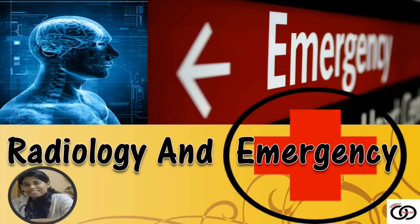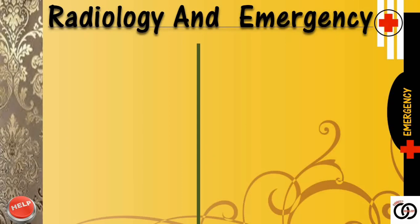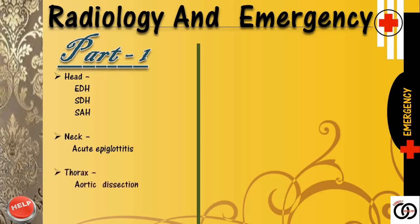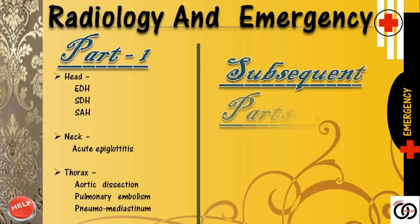Radiology and emergency. First, I want to give you the overview regarding topics covered in this video. This radiology and emergency video will be uploaded in parts. In part 1, we will discuss topics like in head: epidural hemorrhage, subdural hemorrhage and subarachnoid hemorrhage. In neck: acute epiglottitis. In thorax: aortic dissection, pulmonary embolism and pneumomediastinum. In subsequent parts of this video, we will discuss the remaining topics.